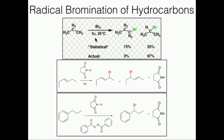We're going to brominate some position on the propane. When you're looking at it theoretically and statistically, you would think bromination should occur at the primary position because it's least sterically hindered. You would predict maybe 75% on the primary carbon and 25% on the secondary. It turns out that's not the case — not even close. In reality, we actually see the vast majority of bromination on the secondary position versus the primary.